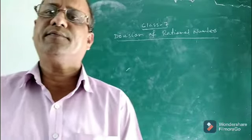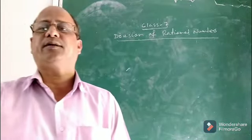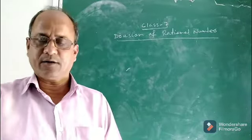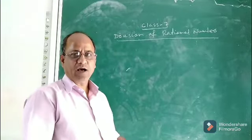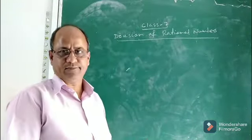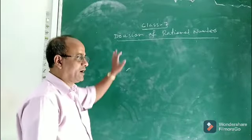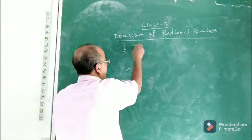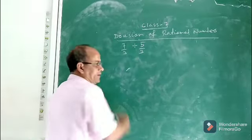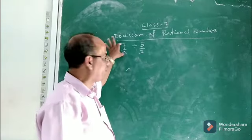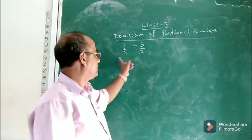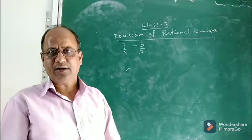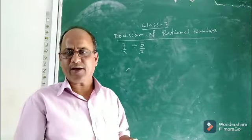Division of Rational Numbers. To understand how one rational number is divided by another, let us take an example. Suppose you are given a rational number 7 by 3, and you want to divide it by another rational number 5 by 3. Both are positive rational numbers. To understand this, let us go back to Class 5 where we divided fractions.